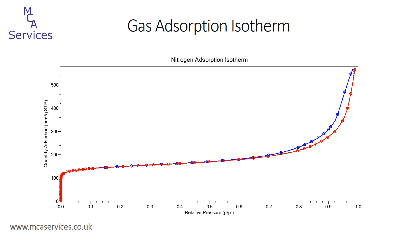Although it's usual to describe this analysis as gas adsorption, we're actually referring to a process of physisorption — that's physical adsorption — and that is the interaction between adsorbing atoms, the adsorbate, and the sample, the adsorbent. Physical adsorption occurs through interaction of weak forces of attraction, such as van der Waals forces. They are of low enthalpy, typically lower than 50 kilojoules per mole, and importantly they don't involve the formation of chemical bonds.